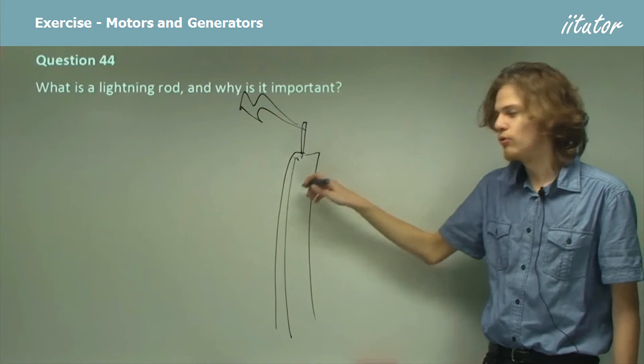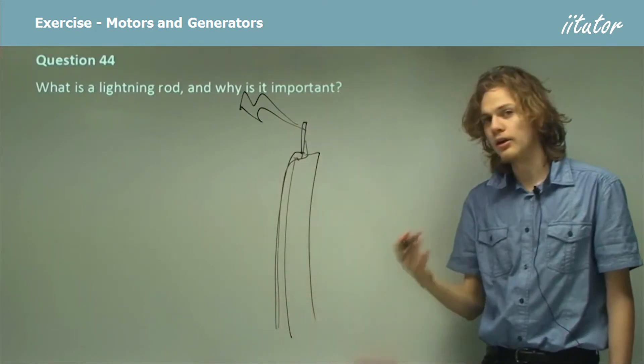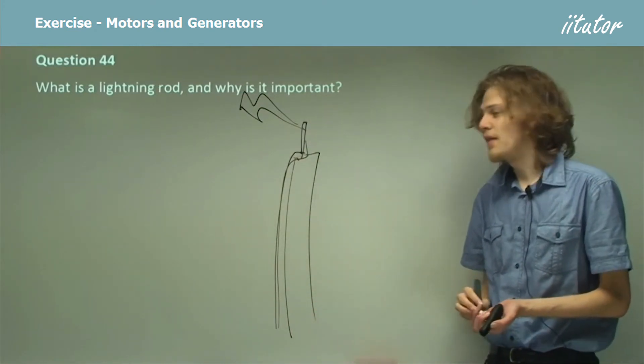Then instead of going all the way through the building, it'll just go straight down the wire, the lightning rod, and into the ground. And that's what a lightning rod is.